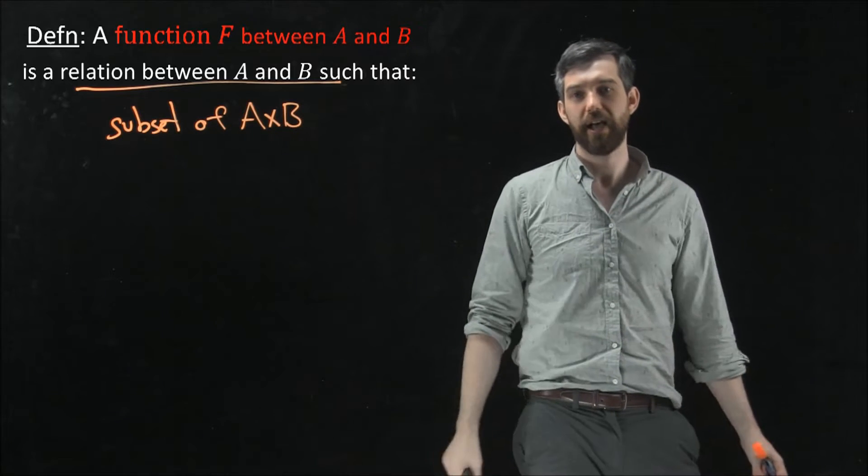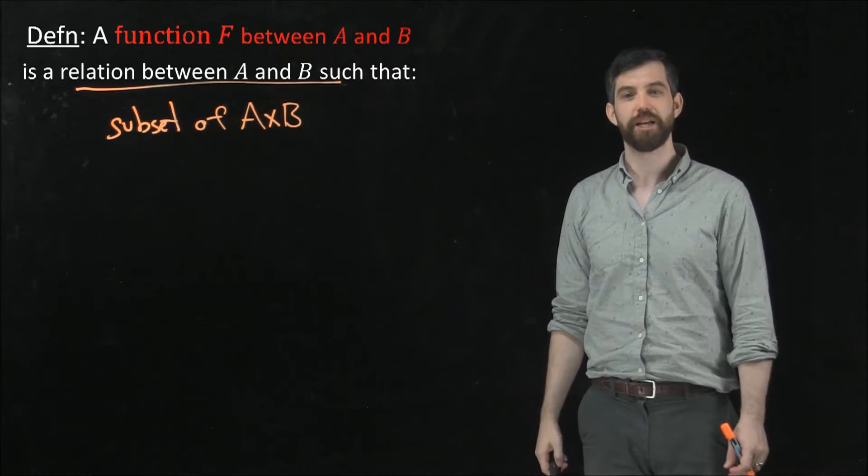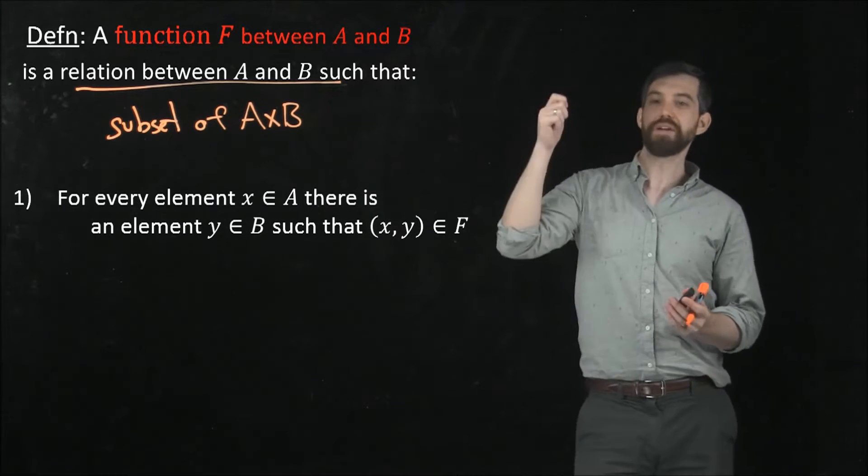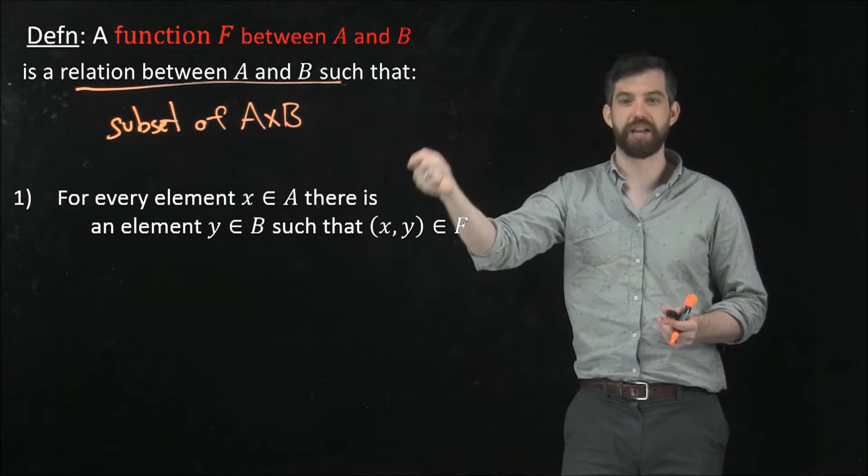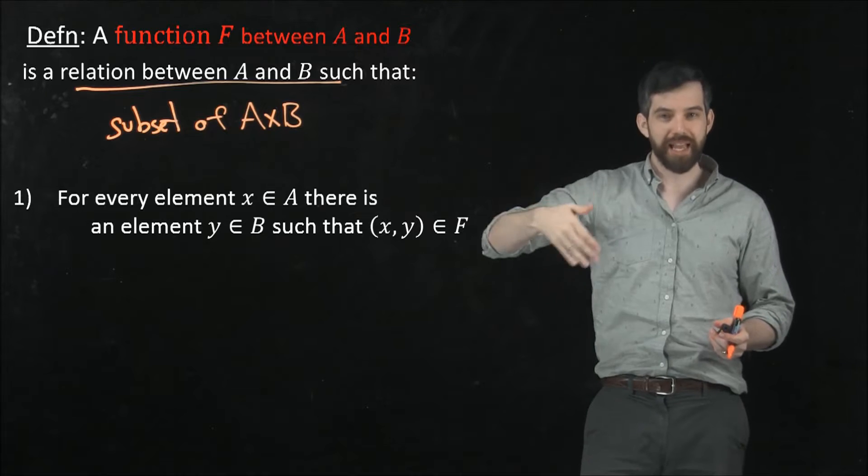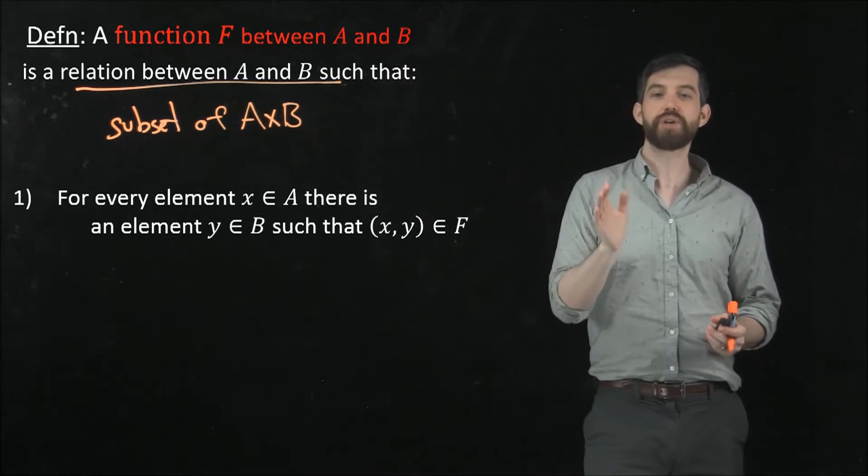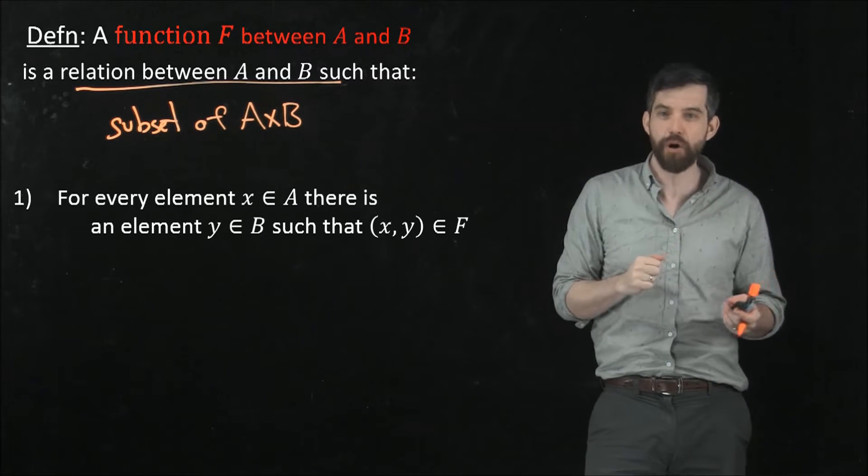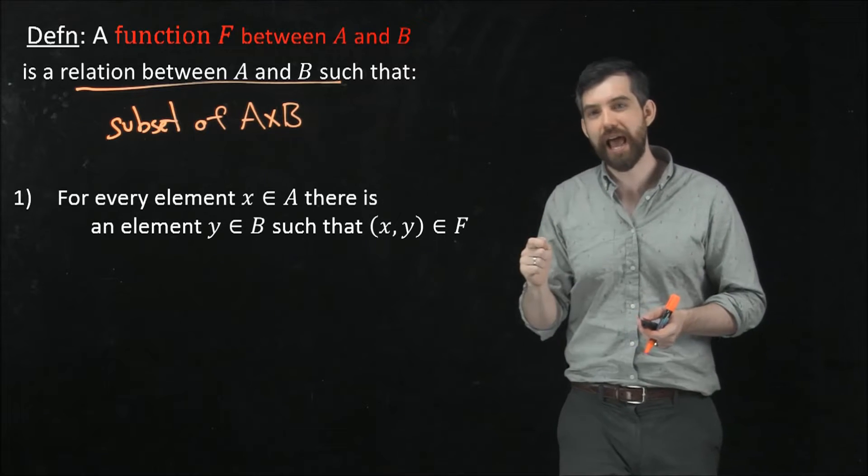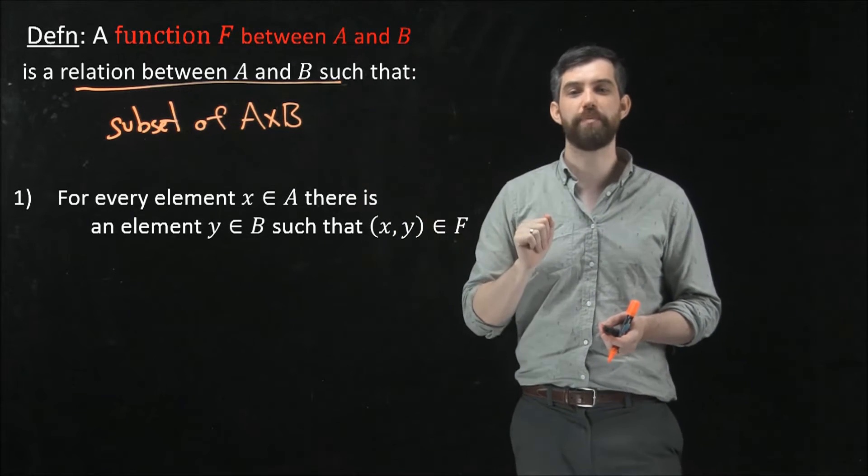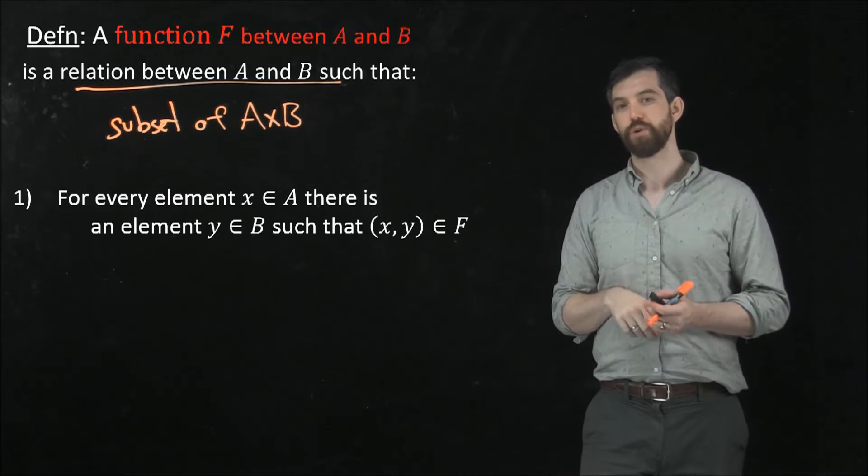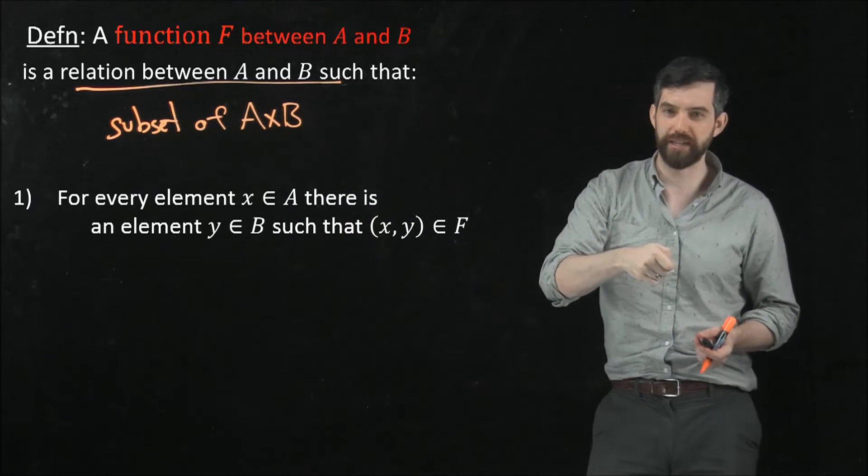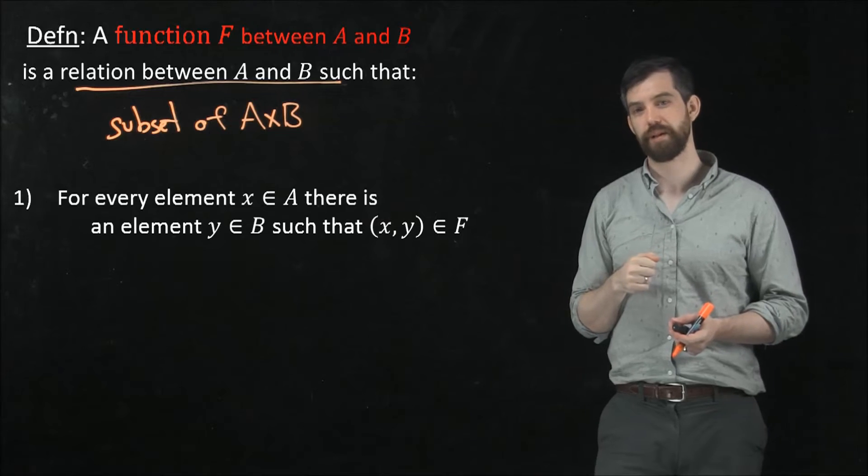So this is what we have. A function is a subset of A cross B. That's partly the case, but I've got two properties. So the first property is this: For every element x inside of the first set, inside of A, that is, for every input value x, there is going to be an output value, there's going to be an element y which lives in the output, the B's, such that x comma y, that ordered pair, is going to be in F. So what does this mean? For every input, there is some output that my function is going to be giving.